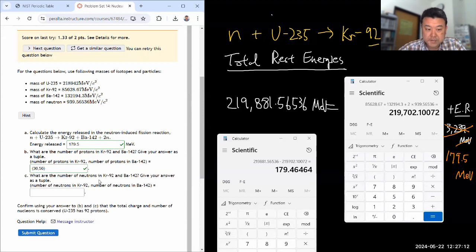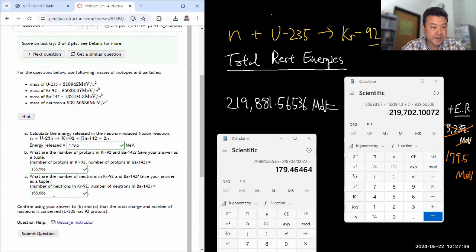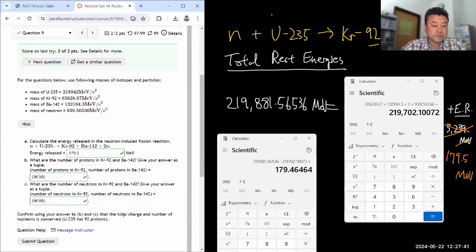What are the number of neutrons in krypton and barium? So it's a simple arithmetic. 92 minus 36 gives you the number of neutrons. So that would be 56. Oh, that is so confusing. 142 minus 56 gives you the number of neutrons in barium. That would be 86. And yeah, that should be correct.